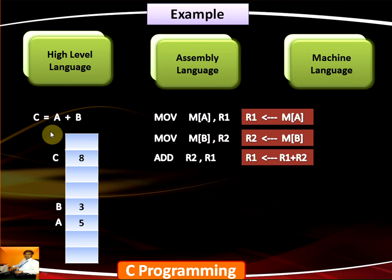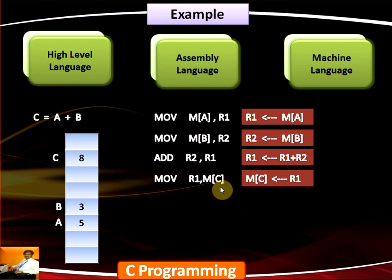But we need to store the result into memory content of C, so we move R1 content into memory content of C. This is how an assembly code works. A simple high level expression becomes much more complicated in assembly code. It is much more difficult to write assembly language instructions.